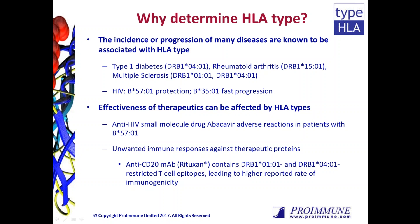The effectiveness of therapeutics can also be dramatically affected by the HLA type of patients. This can be the case for any therapeutic that interacts with HLA. For example, the anti-HIV small molecule drug abacavir can cause adverse reactions in patients that carry B*5701. Any protein or peptide-based therapeutic has a potential to cause unwanted immunogenicity, and to understand this the HLA types of patients in trials should be known.